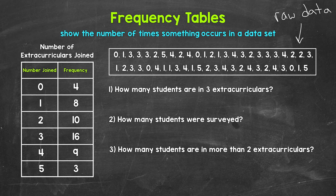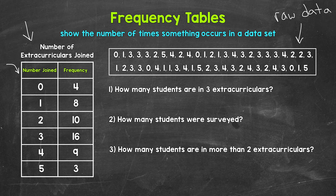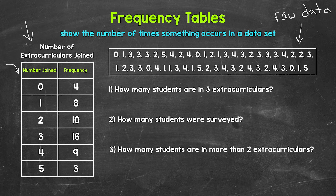As you can see, this raw data is pretty difficult to interpret and understand as is. A frequency table will help us organize everything, and our table is right here to the left. The left column represents the number of extracurriculars joined: 0, 1, 2, 3, 4, and 5. I went from the smallest value in the dataset — 0 — to the greatest value — 5. This is considered ungrouped data because we have individual values in this column, not groups or ranges. The right column shows the frequency — the number of times those values show up within the data.